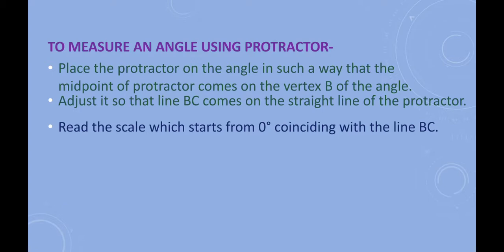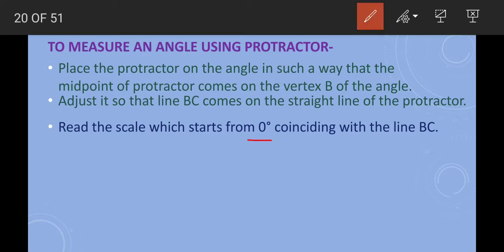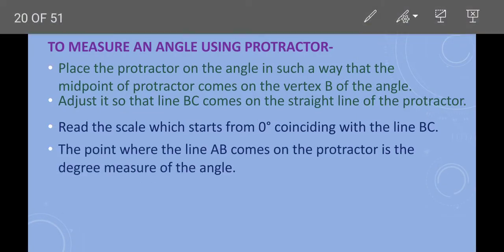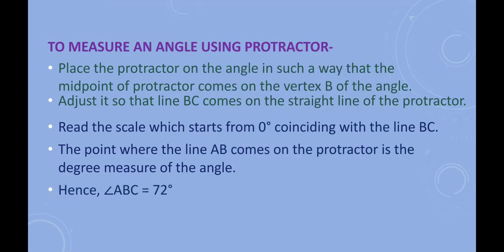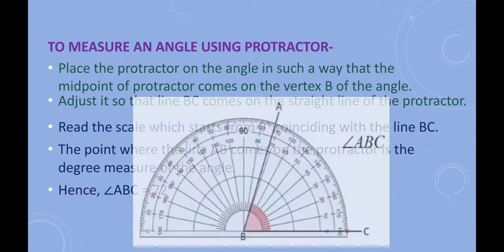Third step: read the scale starting from zero degrees. There are two scales — inner and outer. If you are measuring from the right side, use the inner scale; if from the left side, use the outer scale. Since we are measuring from the right side, use the inner scale starting from zero degrees coinciding with line BC. The point where line AB meets the protractor gives the measure of the angle, which is 72 degrees.